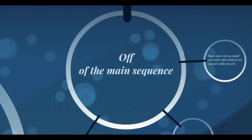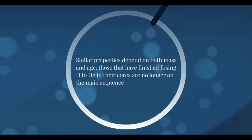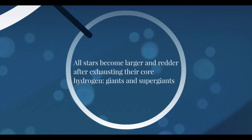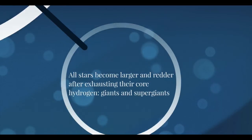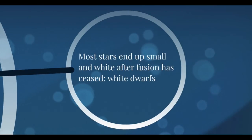What happens to stars not on the main sequence? These are stars no longer fusing hydrogen into helium in their cores — they exist by some other process. Stellar properties depend on both mass and age. Once stars finish fusing their hydrogen, they leave the main sequence and become giants and supergiants. Our Sun will become a red giant for a brief period, and most stars eventually end up as small white cores — white dwarfs — after fusion has ceased.